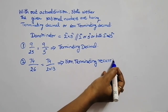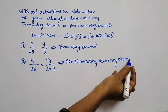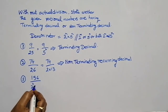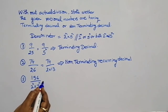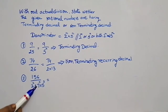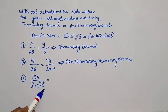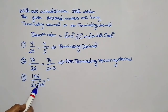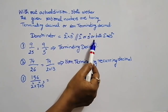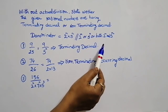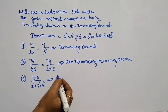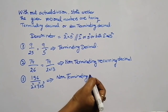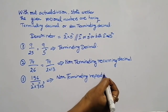Recurring means repeating decimal. Next example: 156 divided by 2 square into 7 square into 5 cube. In the denominator we have 2 and 5, but along with those we also have 7 square. Our condition requires only 2 and 5. Since 7 is present, the decimal representation is non-terminating recurring, or repeating, decimal.